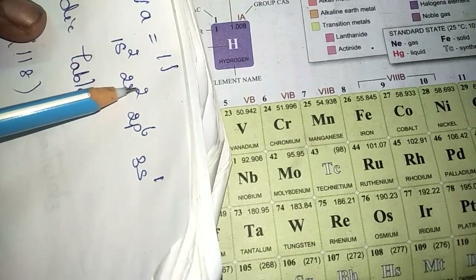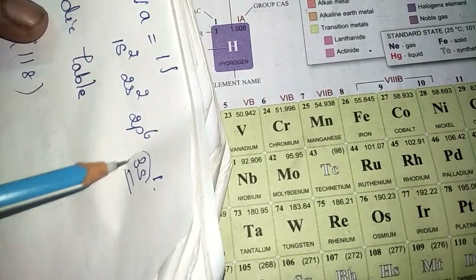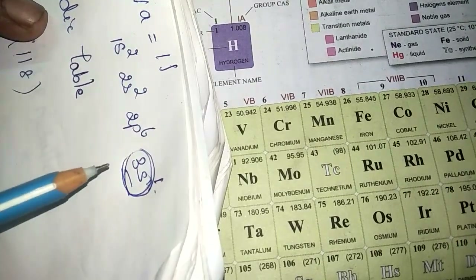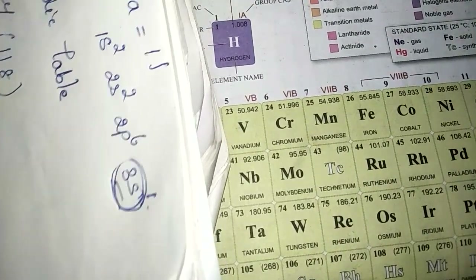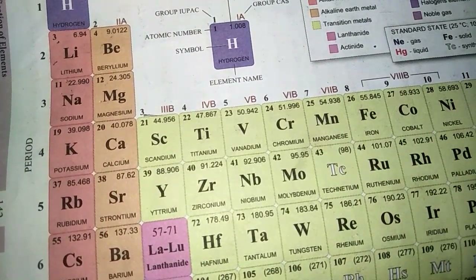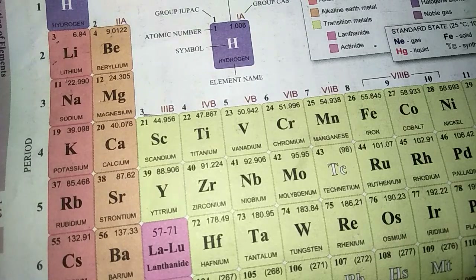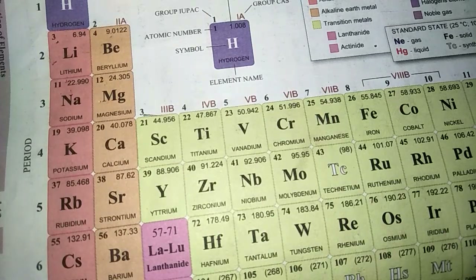So the last subshell ends with s, making it an s-block element. When you write the electronic configuration for all elements in group one and group two, they end in the s subshell — so these two groups are called s-block elements.